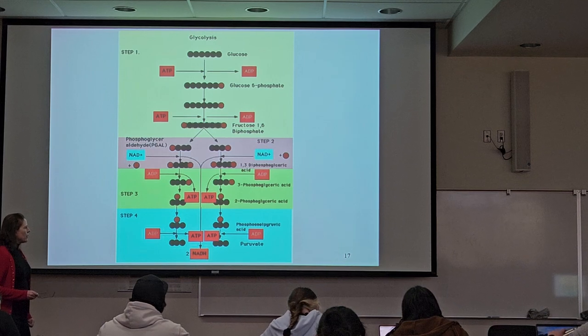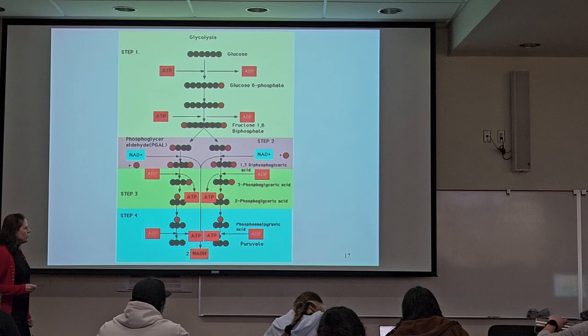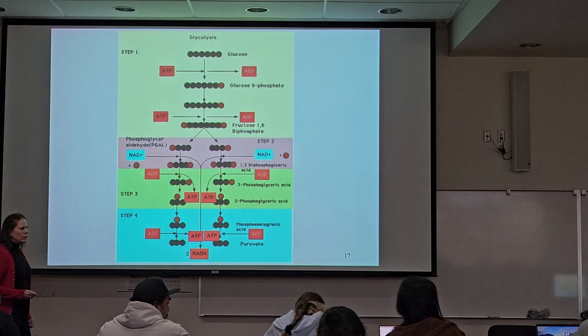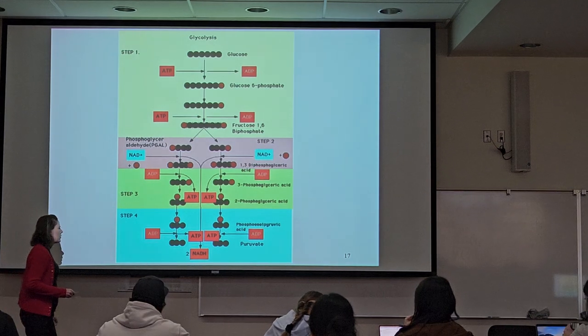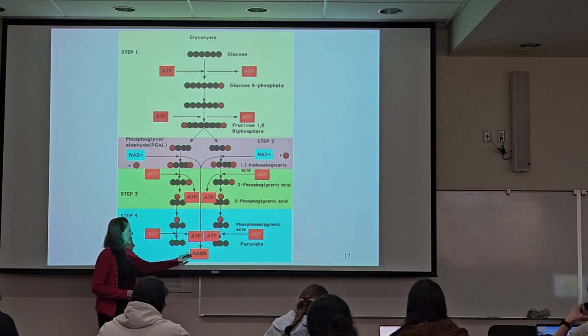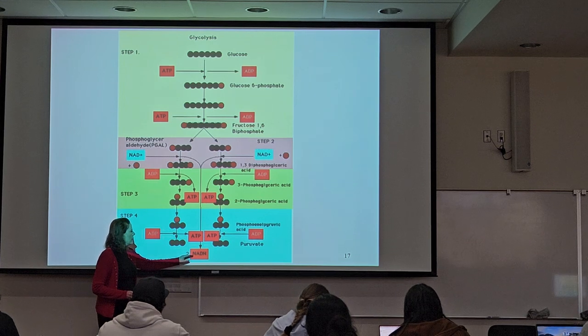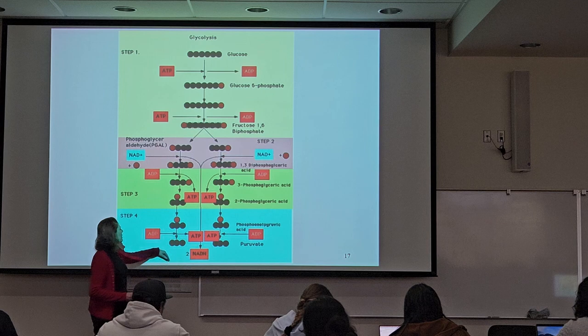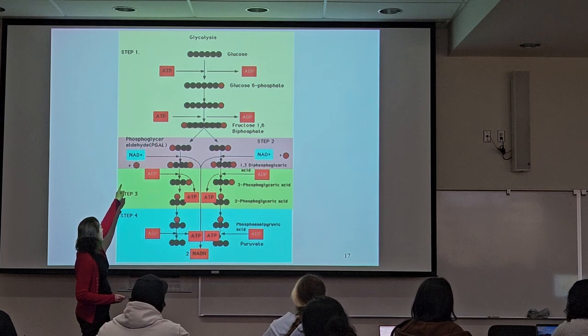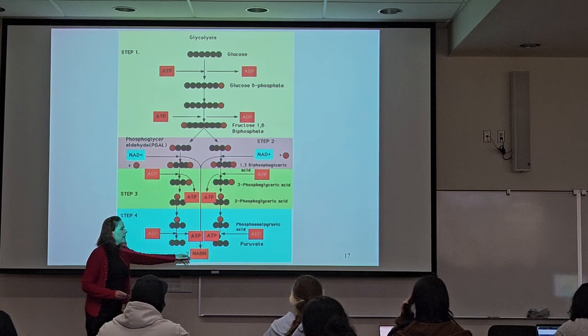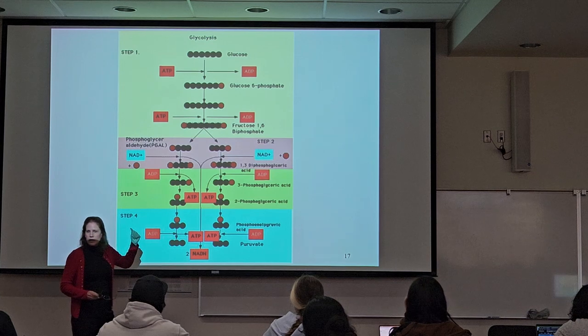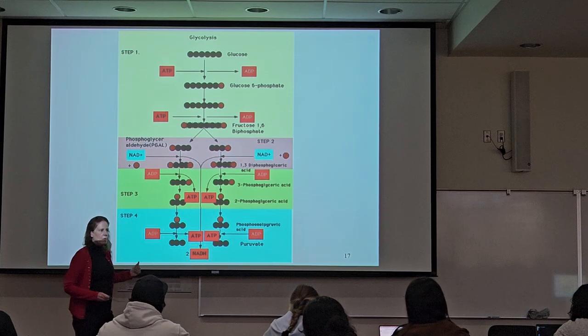When you do aerobic respiration, there's eventually going to be an electron transport chain. So these electrons on this NADH are not going to reduce pyruvate to get reoxidized back to NAD+. They are eventually going to carry their electrons to the electron transport chain, and I'll show you that here in a moment.